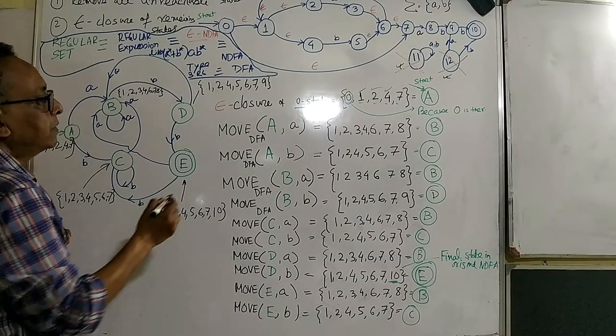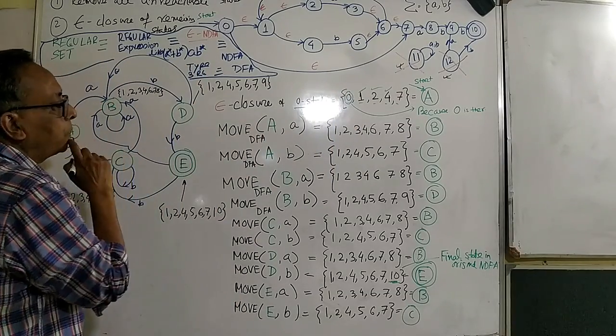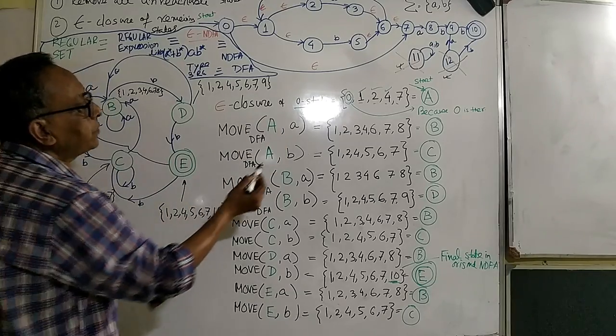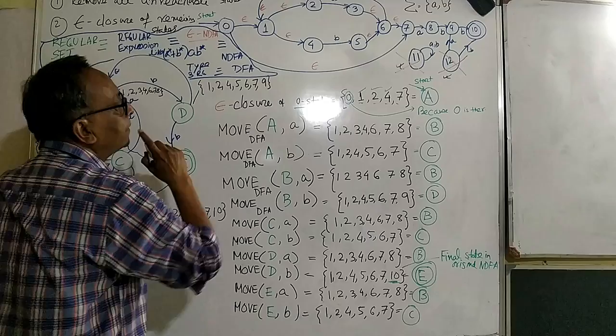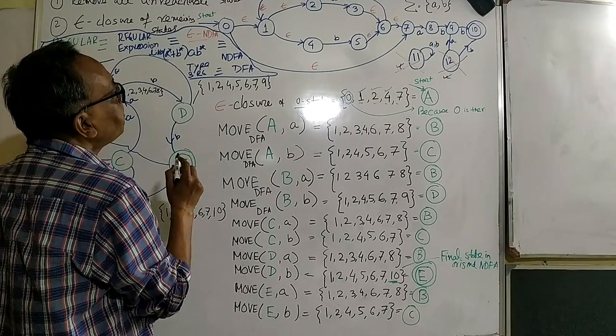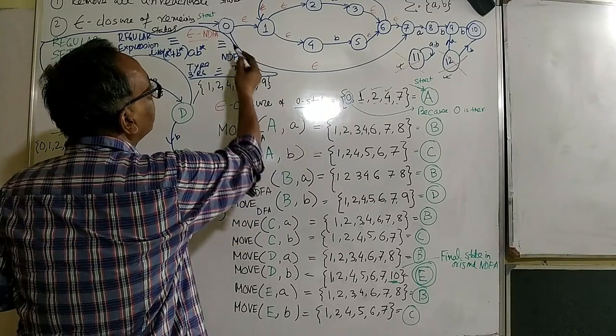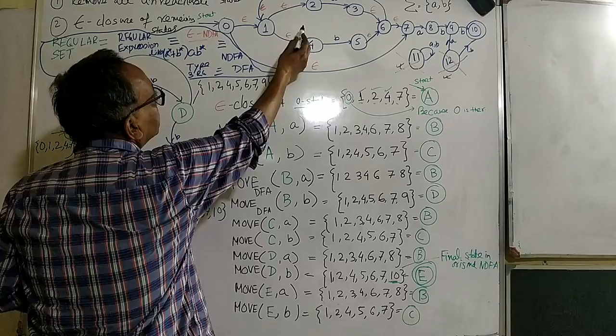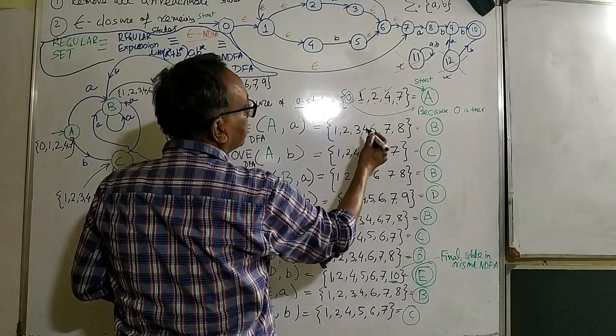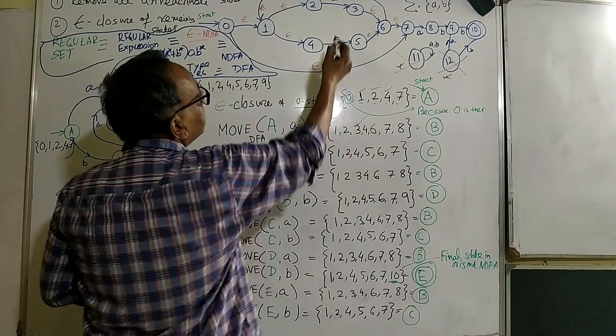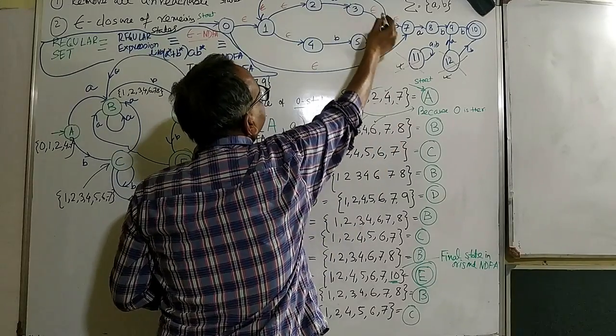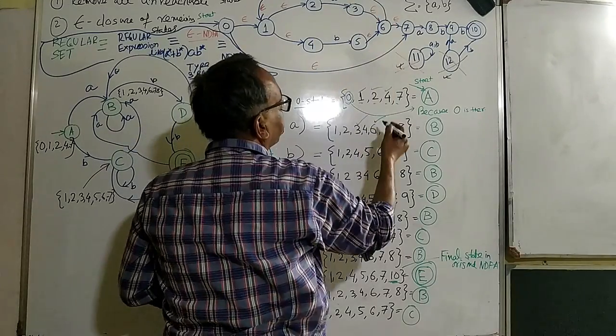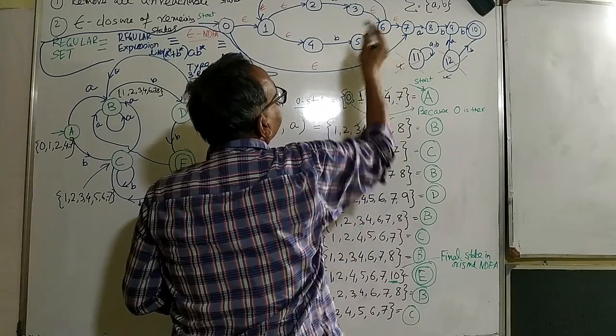Now we go for A comma a. How to calculate A comma a? So we have to give a to all the subsequent state here. We can immediately say, if I take the zero, we can go to a, so we can go to three. So this is three is coming. Because three is coming, six is coming. Because a is there, the six is coming. Because six is coming, seven is coming.